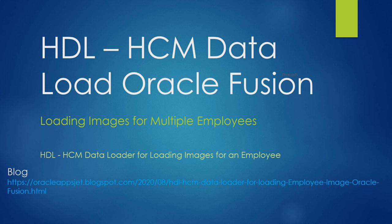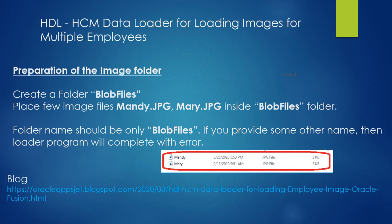For loading the images, we should have three files in place: the blob folder, the dat file, and finally a zip file. Let's see step by step. First, we need to create a folder called the blob folder. The name should be exactly the same.